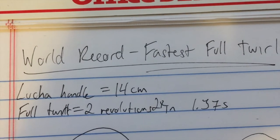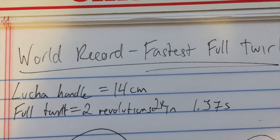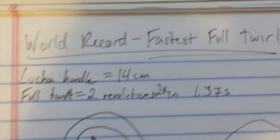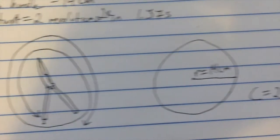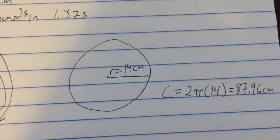All right, so the bite handle of the Lucha is 14 centimeters. The full twirl makes it do two revolutions each way, so it's two revolutions two times in 1.37 seconds. As you can see by this diagram here, this is the circle we're using, the circumference of which is 87.96 centimeters.